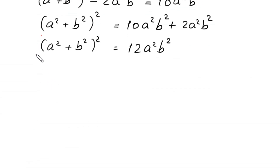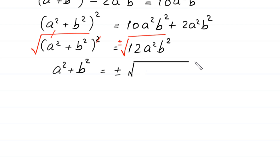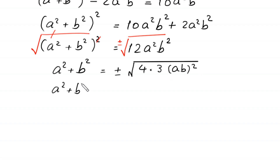Now we take the square root of both sides. The square on the left cancels with the square root, leaving us with a squared plus b squared equal to plus or minus the square root of 12 times a squared b squared. The 12 can be written as 4 times 3, and a squared b squared can be written as (ab) whole squared.